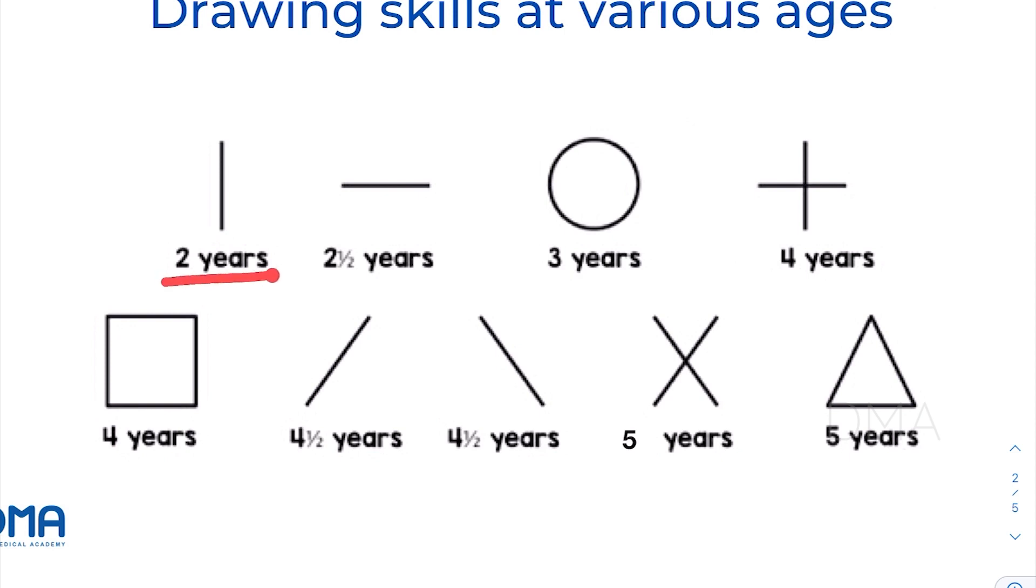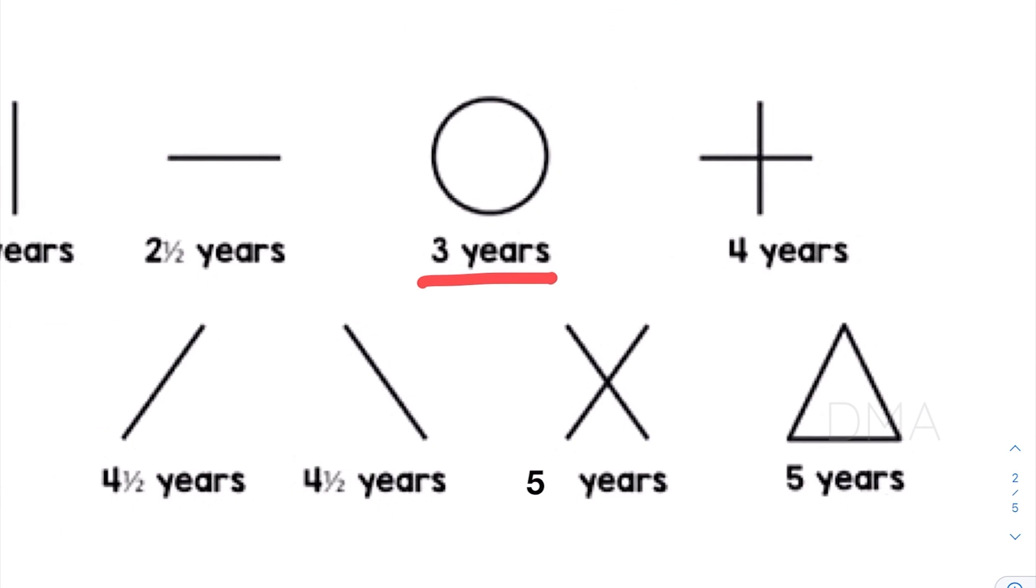At the age of two years, the baby is able to copy a vertical line. At the age of two and a half years, the baby is able to copy a horizontal line. And at the age of three years, the baby should be able to copy a circle.